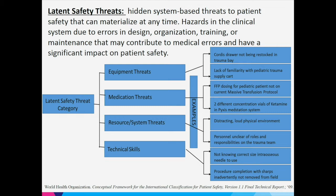Latent safety threats are hidden, system-based hazards in the clinical environment due to errors in design, organization, training, education, or maintenance that may contribute to errors and significantly impact patient safety. We use the WHO framework, which groups these threats into four categories: equipment threats, medication threats, resource/system threats, and technical skill. An equipment threat example is a critical item like a large-bore IV not being stocked when you need it during a massive hemorrhage.